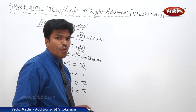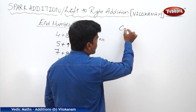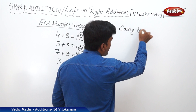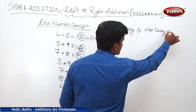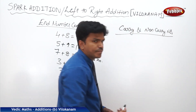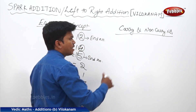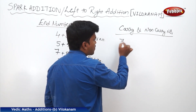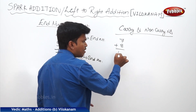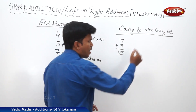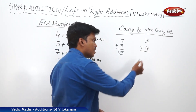The second concept in this method is carry and non-carry numbers. For example, 7 plus 8 gives 15, and 3 plus 4 gives 7.